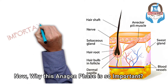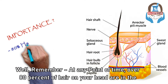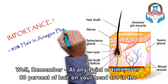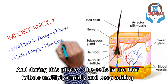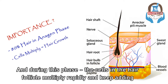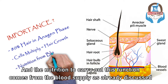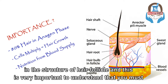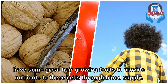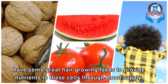Now why is the anagen phase so important? At any point in time, over 80% of your hair on your head are in the anagen phase. During this phase, the cells in the hair follicle multiply rapidly and keep adding to the hair shaft, and your hair grows. The nutrition to carry out this function comes from the blood supply, as already discussed in the structure of the hair follicle. You must have some great hair-growing foods to provide nutrients to these cells through the blood supply.